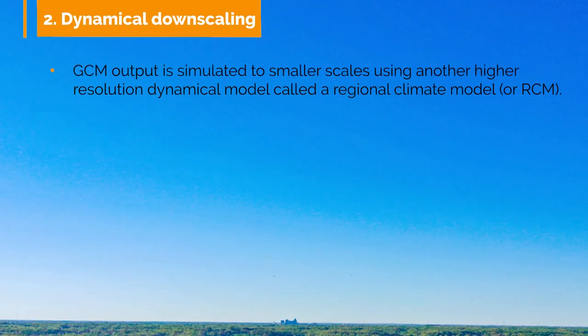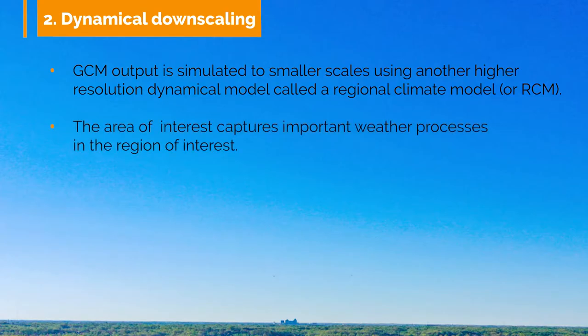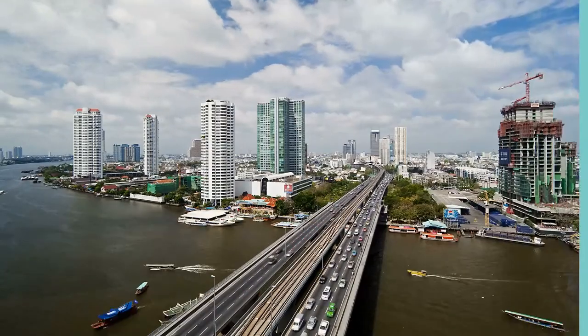Dynamical downscaling is a method where GCM output is simulated to smaller scales using another higher resolution dynamical model called a regional climate model, or RCM. The regional model for the area of interest is chosen to be large enough to capture important weather processes in the region of interest, while ensuring that the region of interest is far enough from the boundaries of the model.